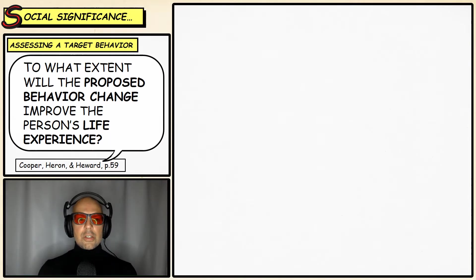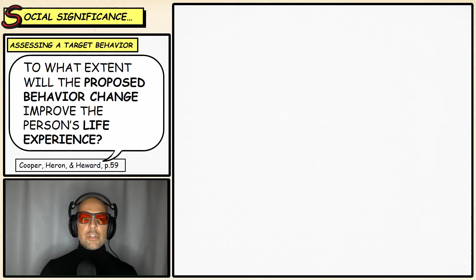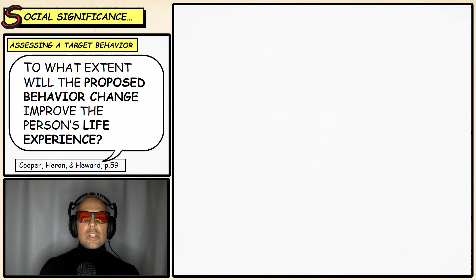One of the major challenges when attempting to change somebody's behavior in order to improve their life is choosing the behaviors. We want to make sure that the behaviors we choose are going to have the greatest impact on that person's life. By this, what we mean is we want to choose socially significant behaviors.